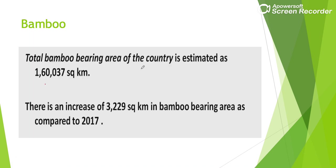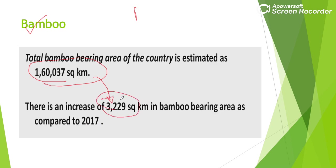The report also covers bamboo resources. The total bamboo-bearing area of the country is estimated at 1,60,037 square kilometers, with an increase of 3,229 square kilometers.